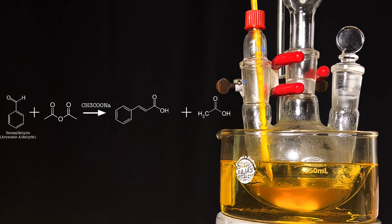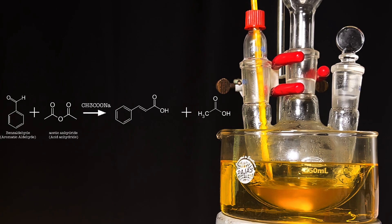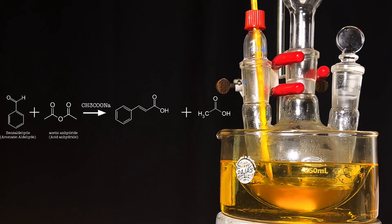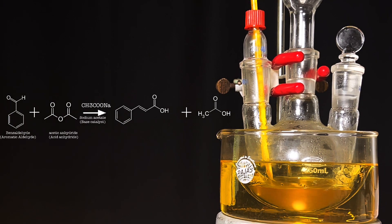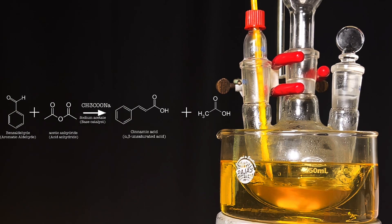The aromatic aldehyde here is benzaldehyde and the acetic anhydride is the acid anhydride. The alkali salt sodium acetate acts as the base catalyst. The alpha-beta unsaturated aromatic acid formed is the cinnamic acid.